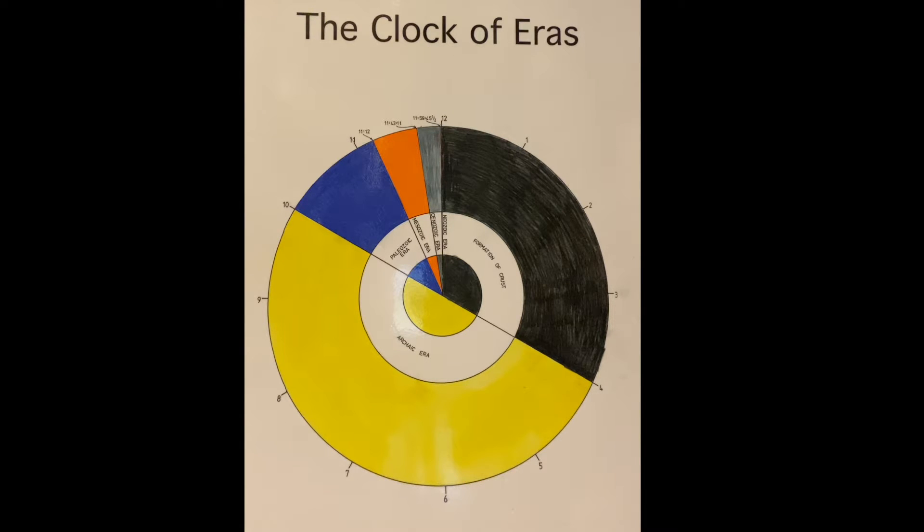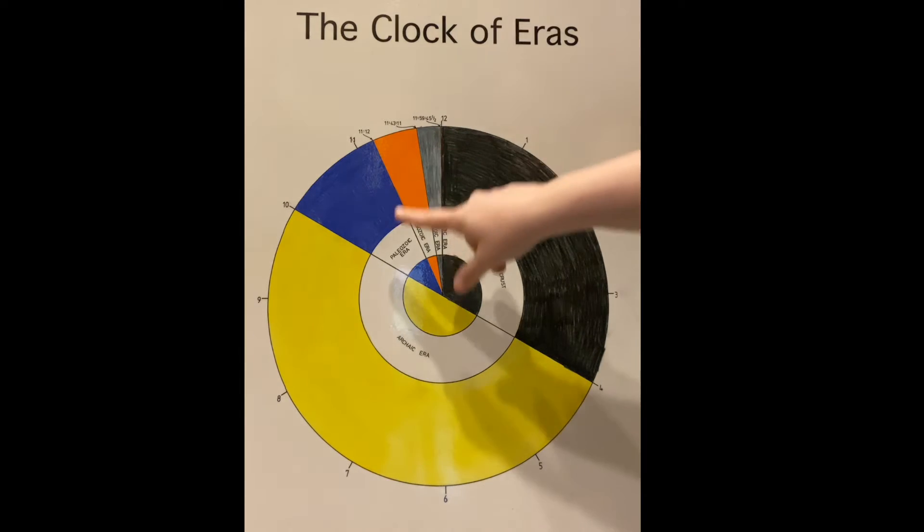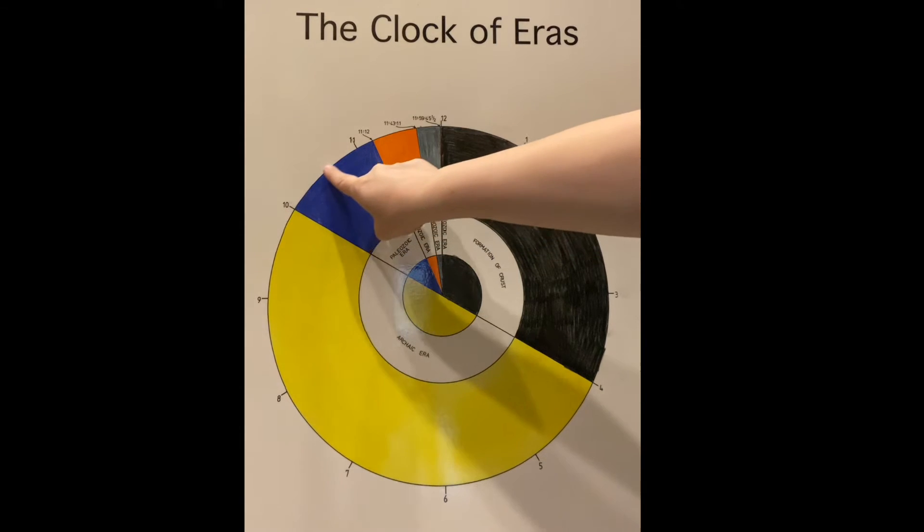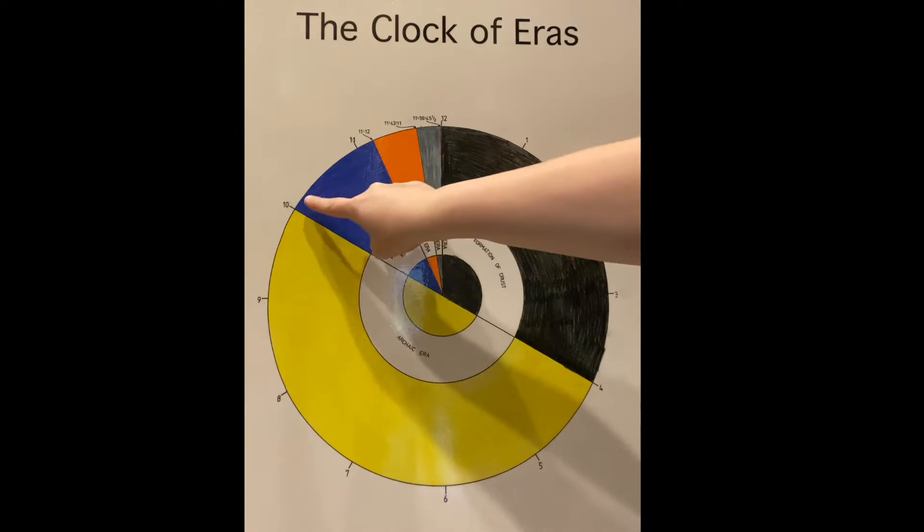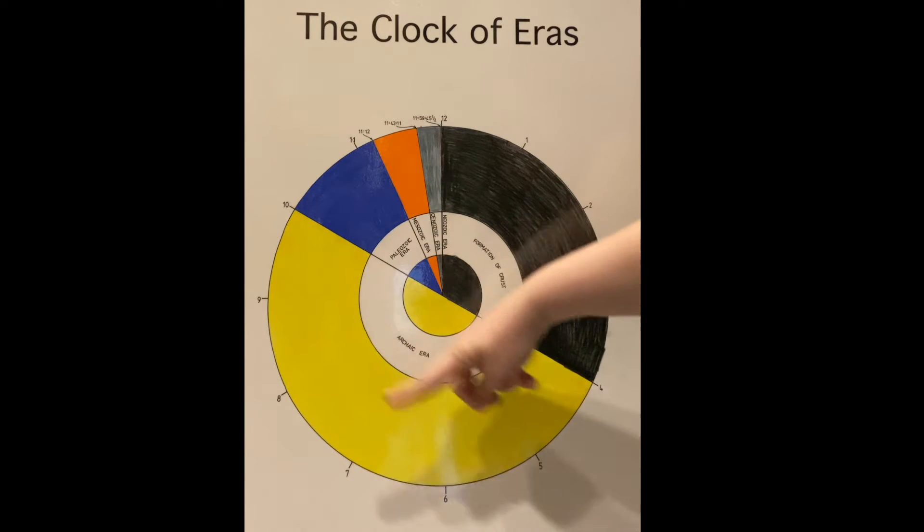Well, we're not finished yet, are we? We still have this orange area. This orange area is called the Mesozoic era. Paleozoic era lasted from 10 o'clock to 11-12, so one hour and 12 minutes of our 12-hour day. So this is the third longest, isn't it? Archaic era, formation of crust, and then Paleozoic era.